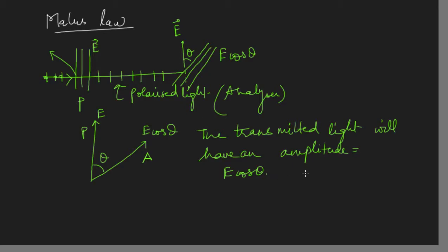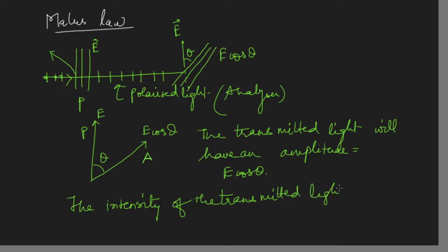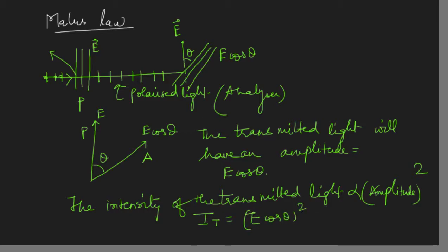Now we know that the intensity of transmitted light is proportional to amplitude squared. So the transmitted intensity I_t is proportional to (E cos theta)² = E² cos² theta. Since E² is the incident intensity I₀, I can write my equation as I_t = I₀ cos² theta.